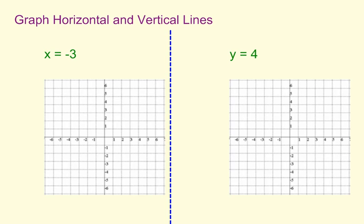So when you have a problem that has just one variable, this first one has just the x and no y, over here we have just the y and no x - that tells us this will be either horizontal or vertical. So which one will it be?